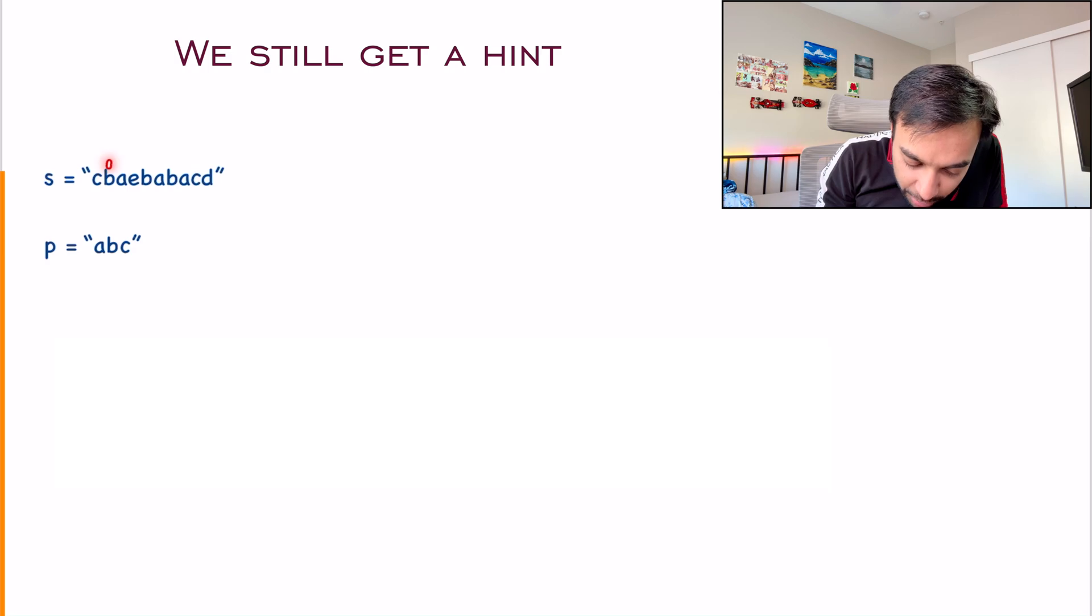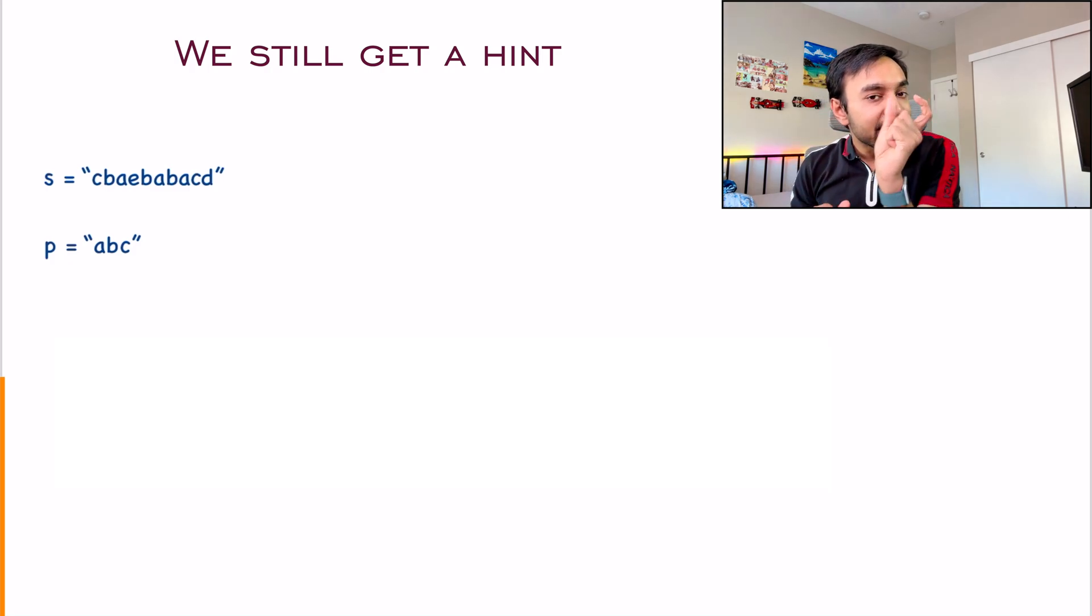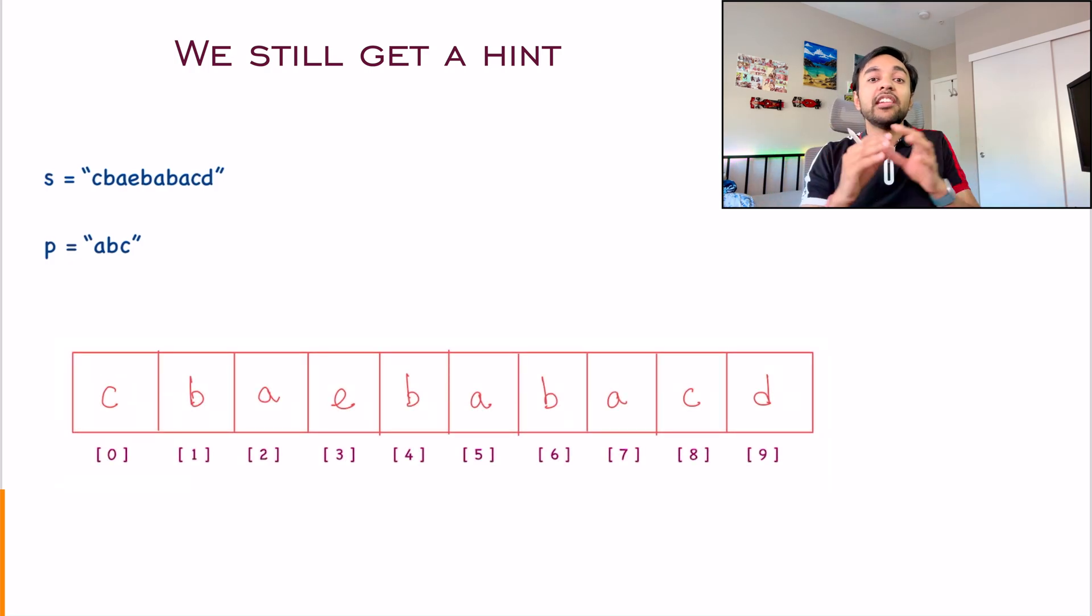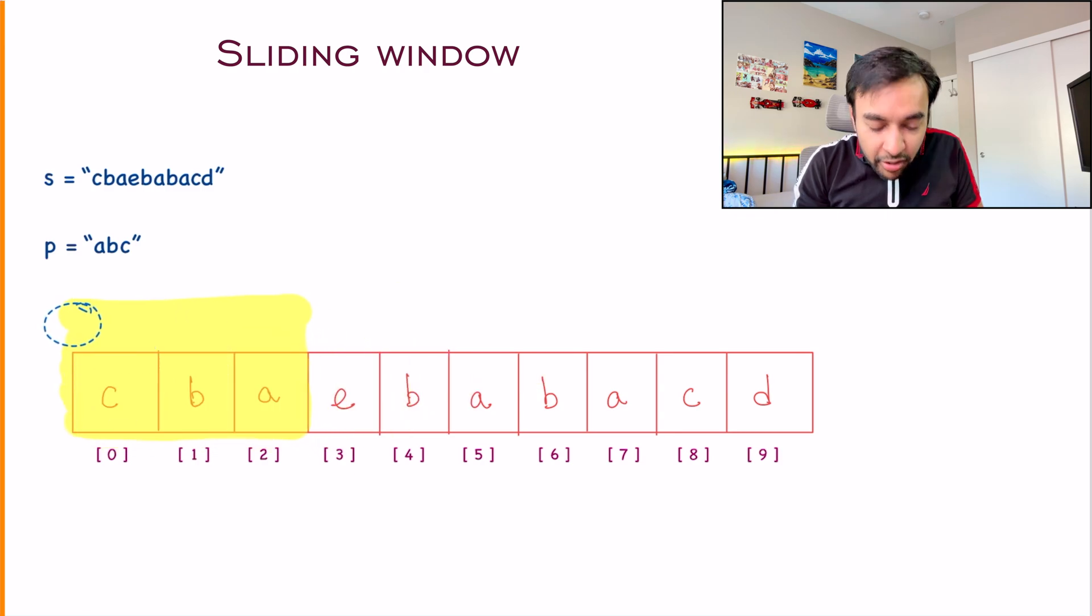Next, what do you do? You start from the second character and then again look at three characters. Then you start from the third character and then again even look at three characters. So every time, what are you doing? You are looking at three characters at once. And this is a very good hint that this problem involves a sliding window algorithm. Because you're only concerned about a certain section of the string at a time.